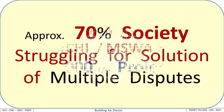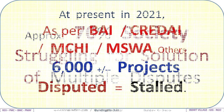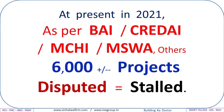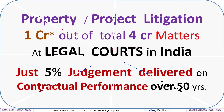As per BAI, CREDAI, MCHI, MSWA, and others, there are currently around 6,000 disputed and stalled property projects in 2021. Litigation accounts for one crore out of a total four crore matters at legal courts in India, with just five percent of judgments delivered on contractual performance over 50 years.